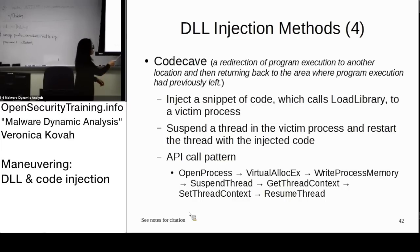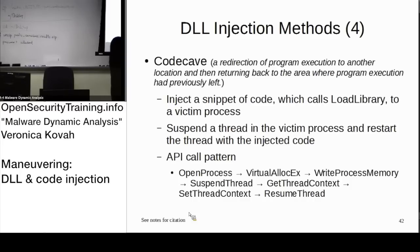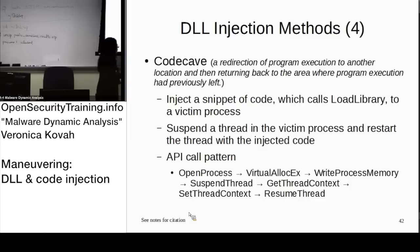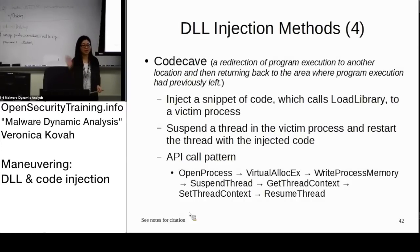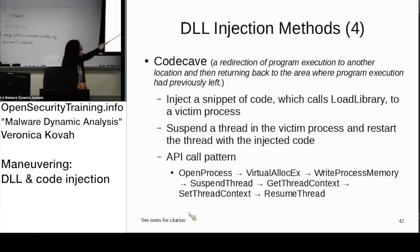In the code cave API pattern you still see OpenProcess, VirtualAlloc, and WriteProcessMemory — the same as with CreateRemoteThread. But the difference is: you see SuspendThread, because it is using an existing thread; then GetThreadContext to save the thread's state; then SetThreadContext to redirect the thread to execute the injected code; and then ResumeThread. After the malicious code finishes it may restore the thread or simply kill it — that depends on the malicious code.